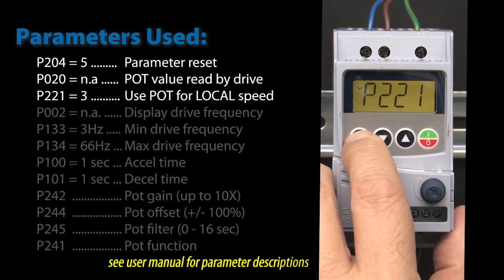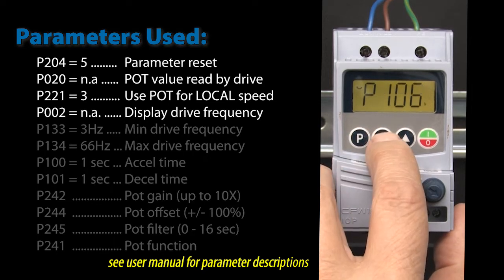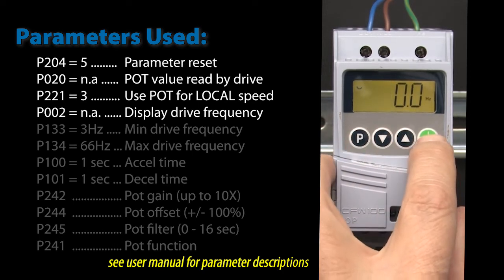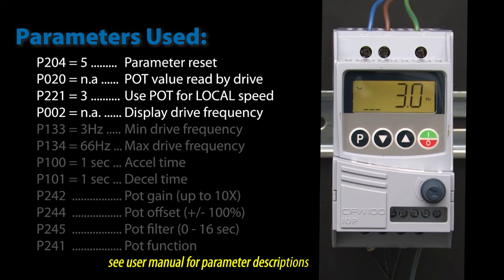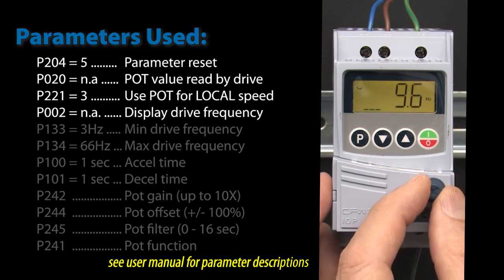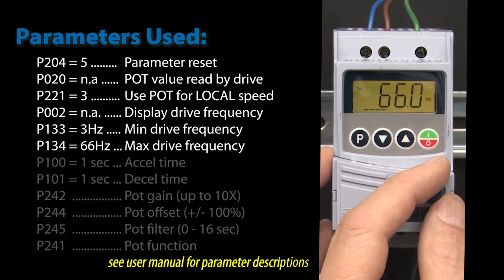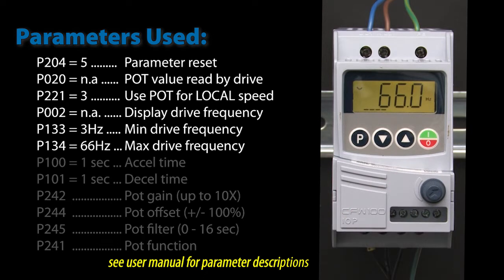If you have the drive in remote mode, then you would do the same thing but in parameter 222 which selects the drive frequency source for the remote mode. And let's scroll back to parameter 2 so we can see the drive's frequency. Hit run and the motor starts spinning at 3 Hz again. Twist the potentiometer knob and the drive responds accordingly. Let's crank it all the way up and the drive goes to the maximum speed in parameter 134 which defaults to 66 Hz.